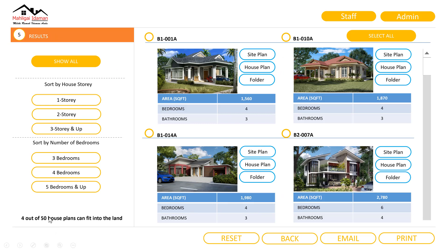So this is the result — 4 out of 50 house plans can fit into the land. Here is the filter I want to be able to use on these results. I want to be able to filter by house story as well as number of bedrooms. I also have this button here where I can choose how many plans from the results to email — for example, just two plans. And when I click email, they will be sent. If I select all, all will be highlighted and I will be emailing all of the plans.